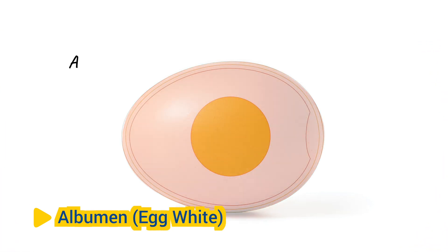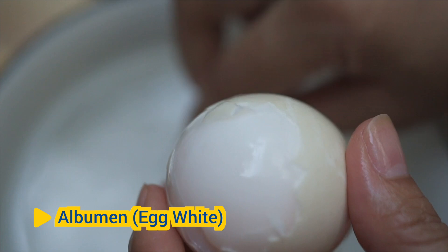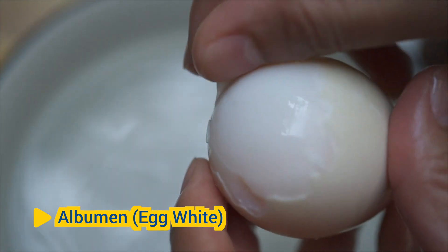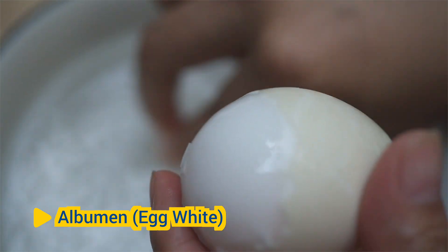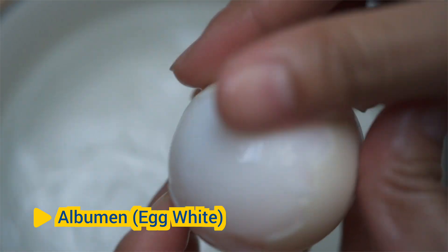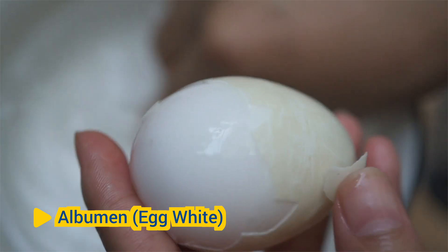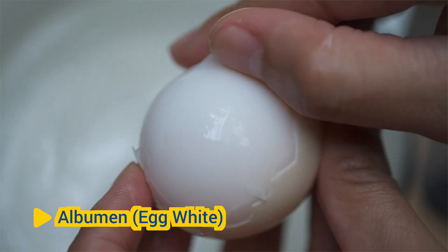Albumin (Egg white). The albumin, or egg white, surrounds the yolk and provides a source of water, protein, and protection for the developing embryo. It consists mainly of water and protein (albumin), and serves to cushion and support the embryo within the egg. The albumin also contains antimicrobial compounds that help protect the egg from microbial contamination.